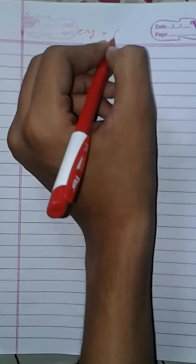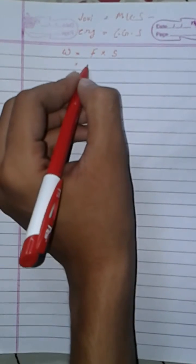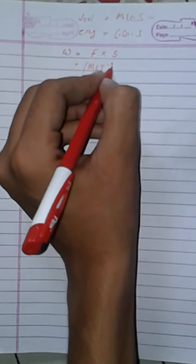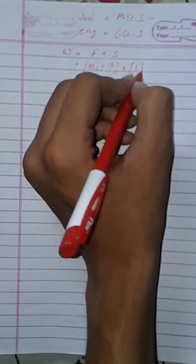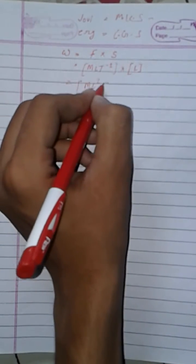Hello friends, today we learn how to convert one Joule of energy into ergs. We know that W equals F into S. Erg is the CGS unit and Joule is the MKS unit. The dimensional formula is ML²T⁻².